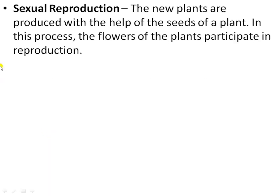Next is sexual reproduction. New plants are produced with the help of the seeds of a plant. In this process, the flower of the plant participates in reproduction. The flower is the reproductive organ in the flowering plant; it is said to be a modified part of the plant for sexual reproduction.